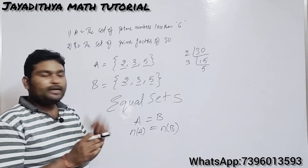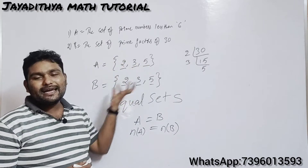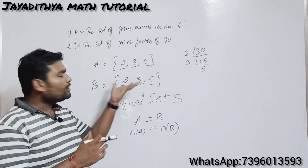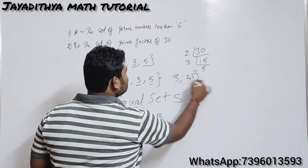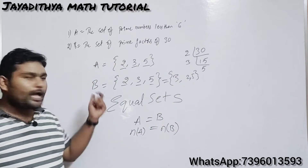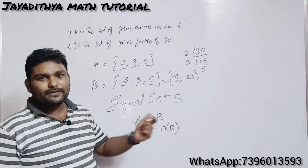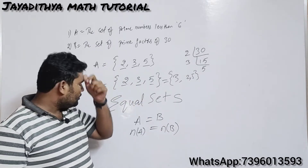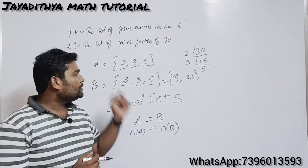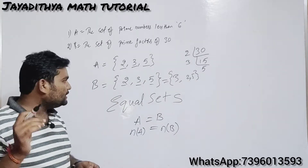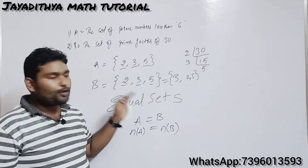The definition of equal sets: if each and every element of a set is present in the other set, then both sets are called equal sets. Also note that the order is immaterial — so {3, 2, 5} and {2, 3, 5} are still the same set. I have stressed this point in the first class when we discussed roster form, so please do watch that class if you haven't.